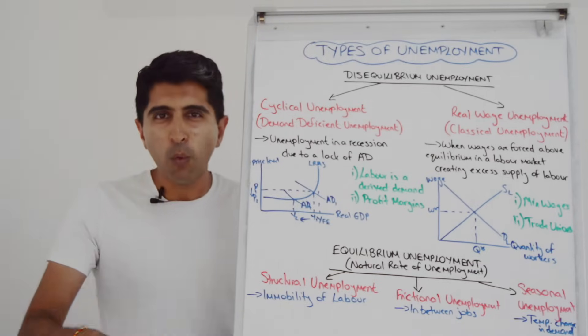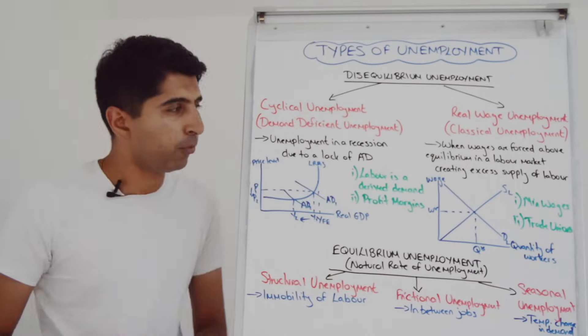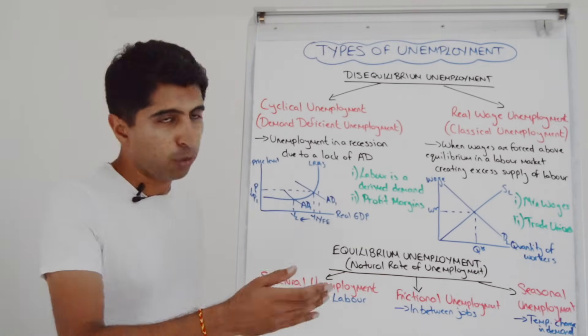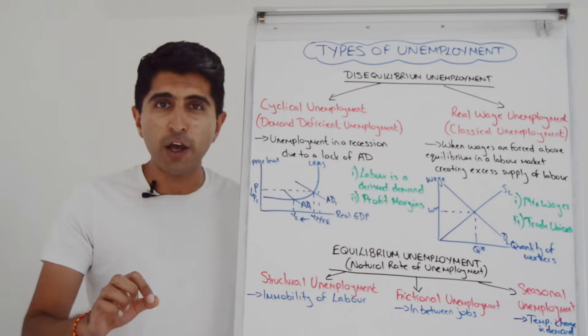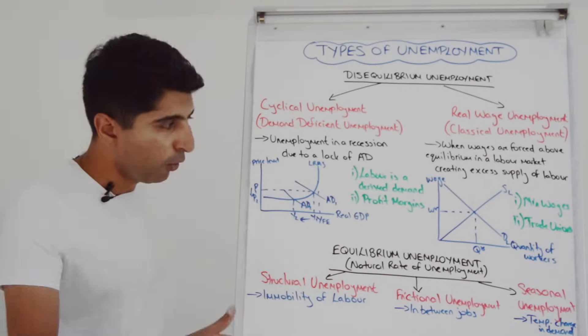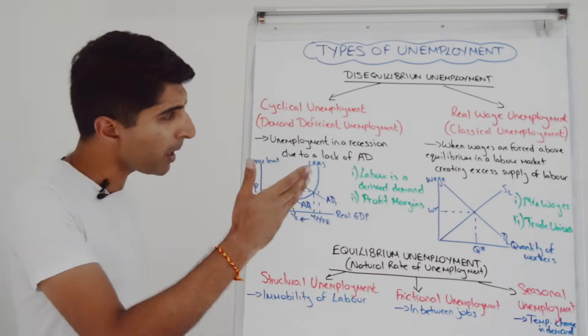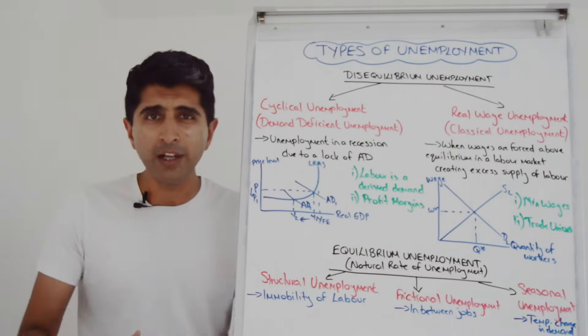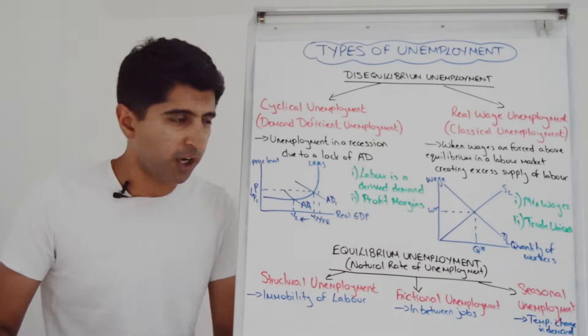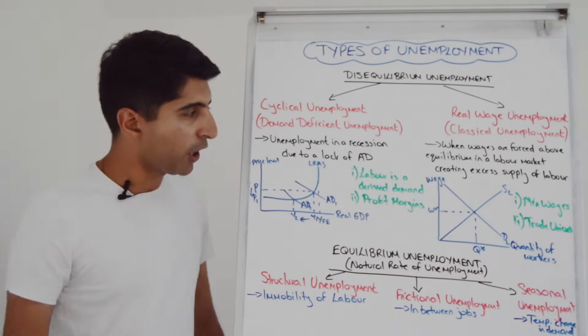You can see why this is called cyclical unemployment — it's unemployment in the downturn of the economic cycle, a recession, or the trough, or a slowdown. And also why it's called demand deficient unemployment: a lack of AD in the economy.